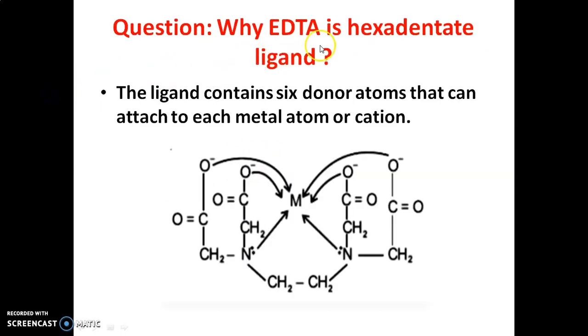Next: Why is EDTA a hexadentate ligand? Hexadent means six. Because this ligand contains six donor atoms. This EDTA contains six donor atoms.